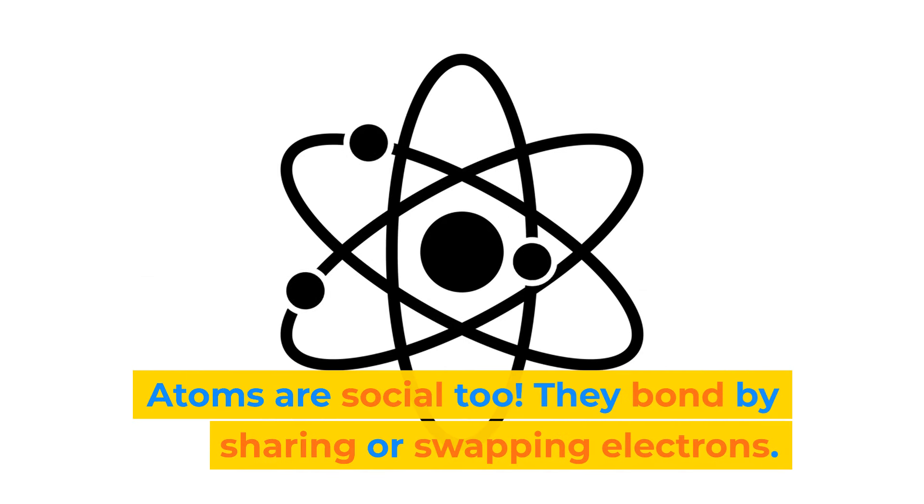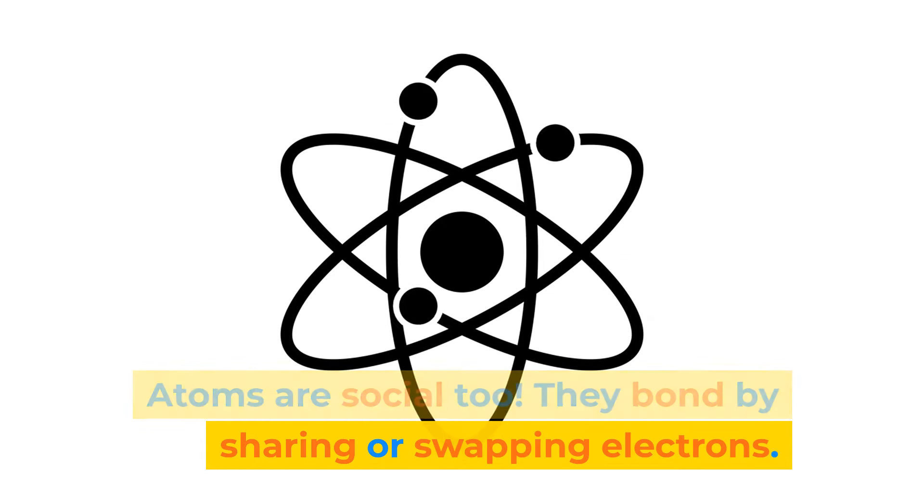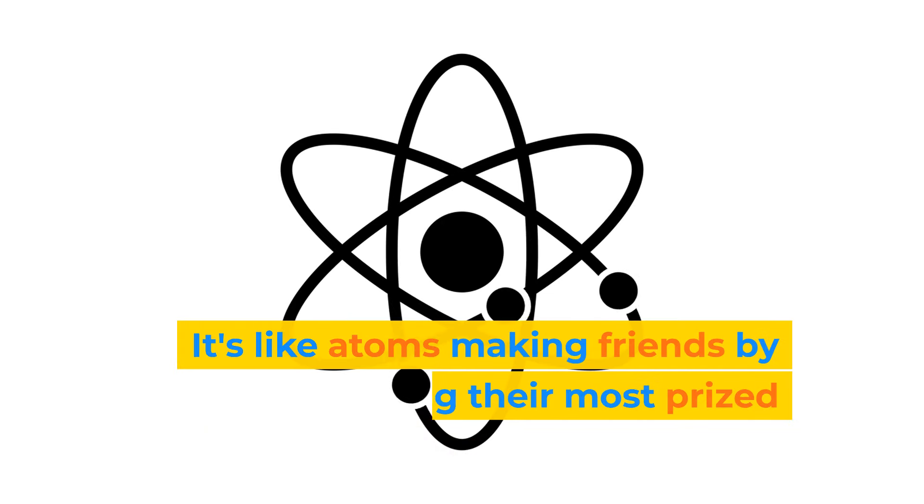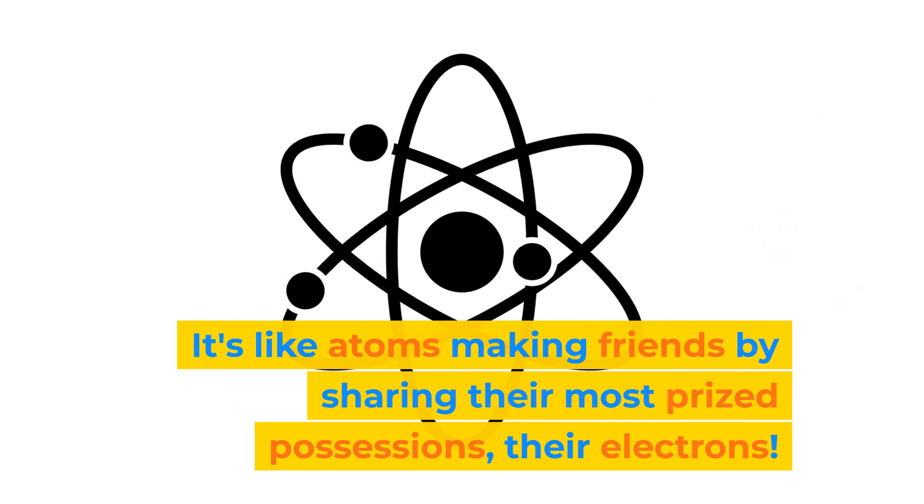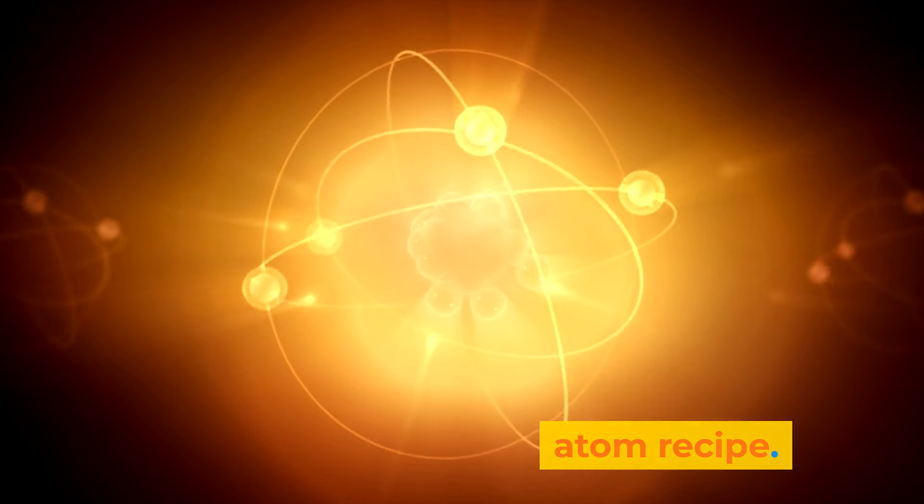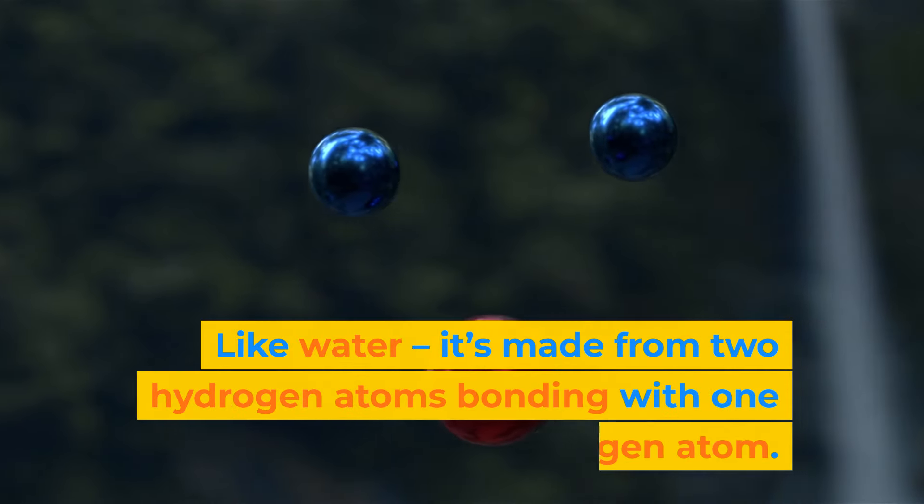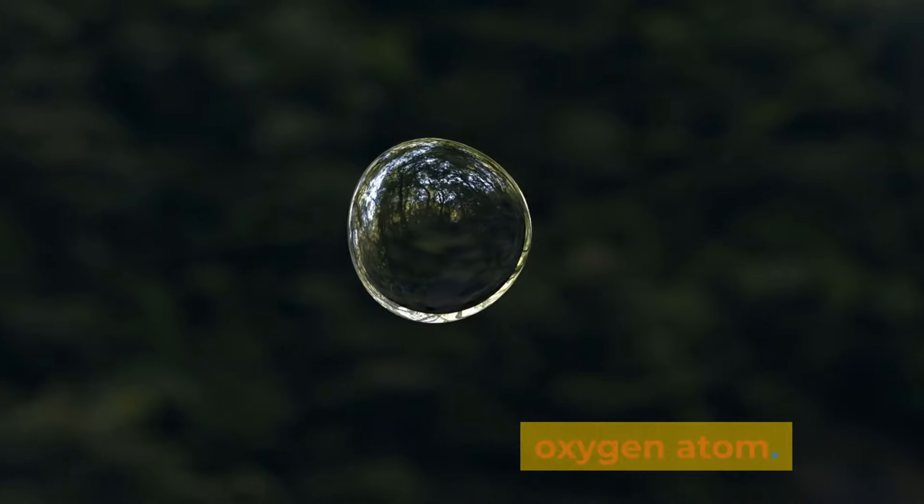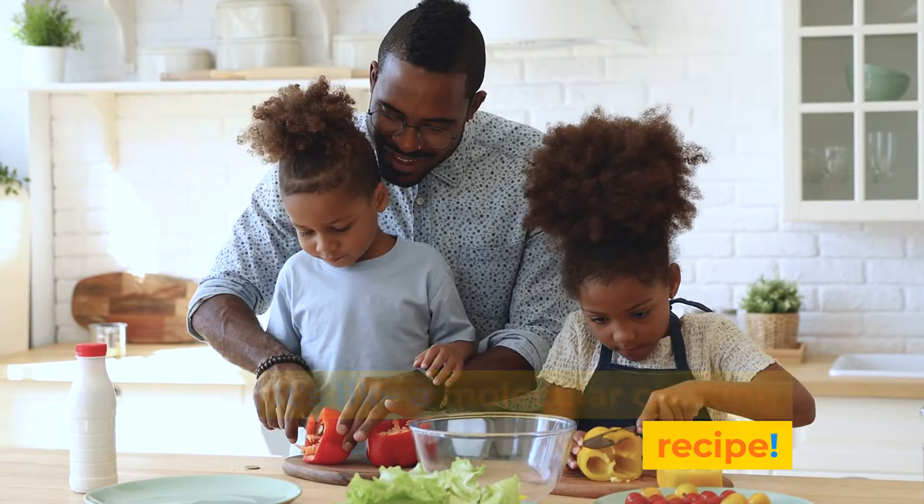Atoms are social too. They bond by sharing or swapping electrons. It's like atoms making friends by sharing their most prized possessions, their electrons. Every type of stuff has its unique atom recipe. Like water, it's made from two hydrogen atoms bonding with one oxygen atom. It's like a molecular cooking recipe!